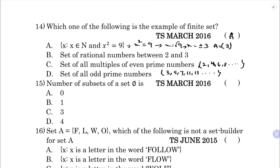Question: number of subsets of a null set. For a null set, there is only one subset, which is the empty set itself - since empty set is a subset of every set including itself. The number of subsets is 1, so the correct option is B.